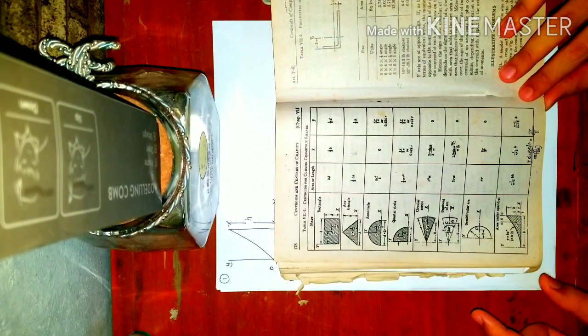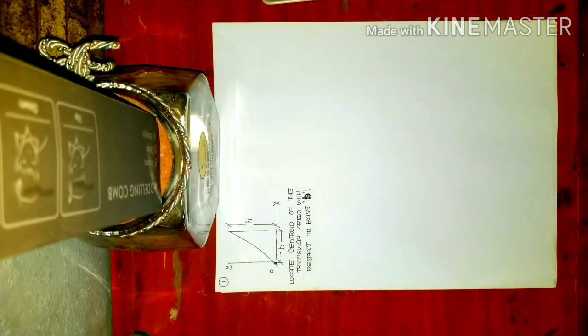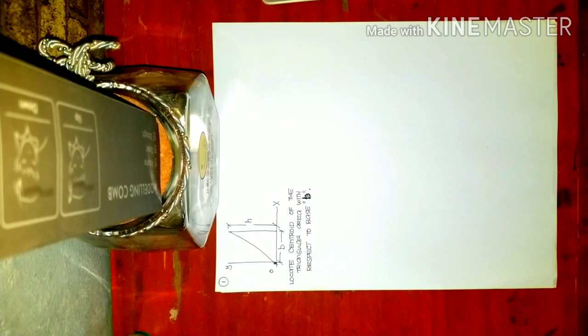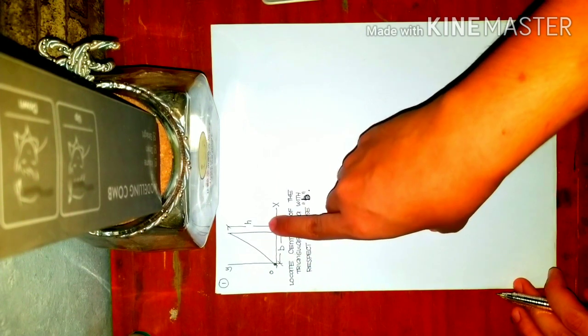I'll show you how we can derive it if you forget, but try not to forget because it will make things harder. We'll show in one example how to derive the centroid of a triangle using integration. In the PowerPoint, turn to the slide showing a triangle with height h and base b. Locate the centroid of the triangular area with respect to the base b.